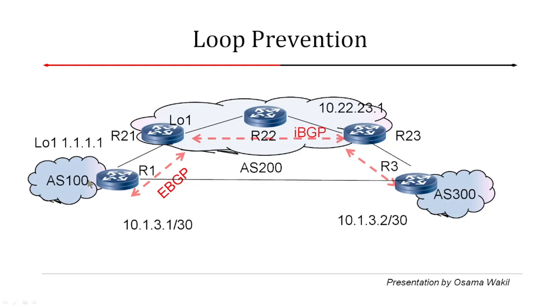However, anything learned from an IBGP session will be advertised to an EBGP router — that's fine. And also, anything learned from an EBGP session — for example this loopback IP address — will be advertised by R21 to its R23 neighbor.